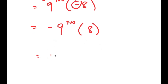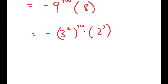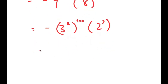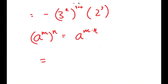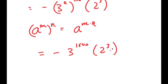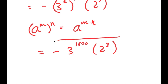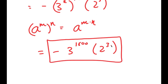This gives me negative (3 squared) to the power of 900 times 2 to the power of 3. Using the exponential property a to the power of m to the power of n equals a to the power of m times n on 3^2 to the power of 900, I get negative 3 to the power of 1800 times 2 to the power of 3. So this is my final solution.